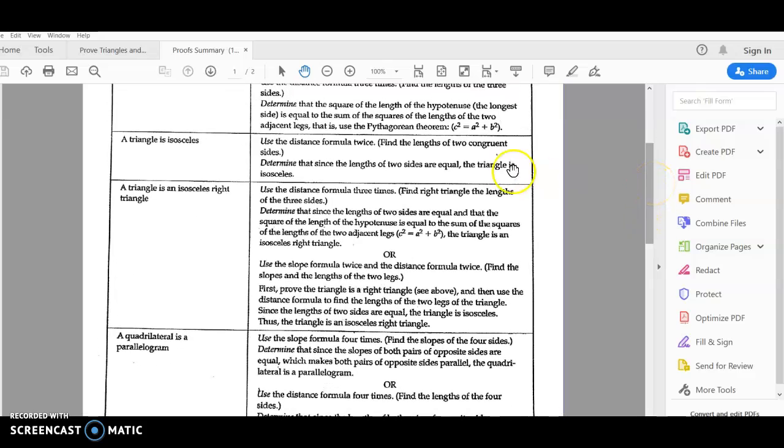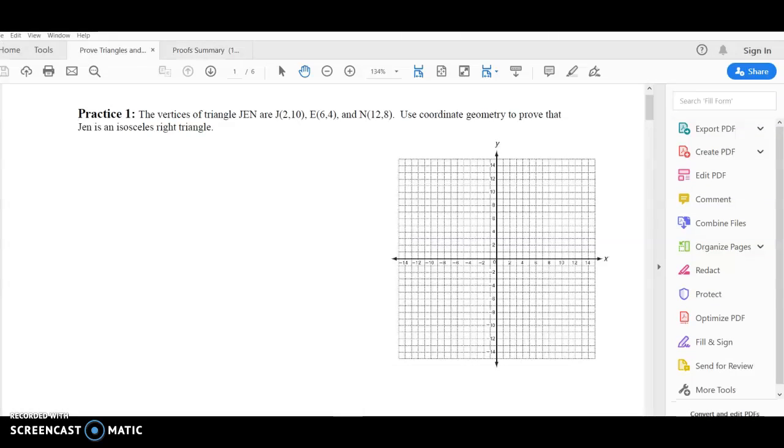So right now the question we're looking at is how to prove that a triangle is isosceles. This says use the distance formula twice, find the length of two congruent sides, and determine that since the lengths are equal, then it's isosceles, because the definition of isosceles triangle means they have two equal sides.